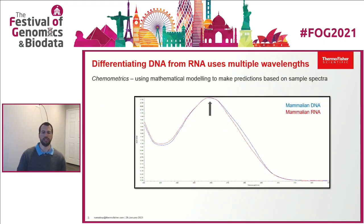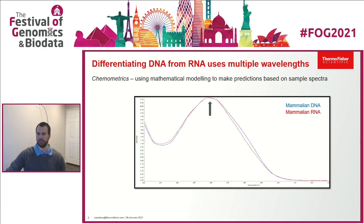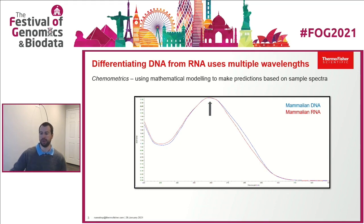The approach we took allows us to differentiate DNA from RNA using multiple wavelengths. Typically we quantify nucleic acid using that peak around 260 nanometers. However, when there are two molecules in the sample that absorb light, it's difficult to use a single point. In this case we can use a technique called chemometrics — a mathematical model that makes predictions on sample concentration of multiple components within the same sample spectrum using multiple wavelengths, not just a single wavelength.